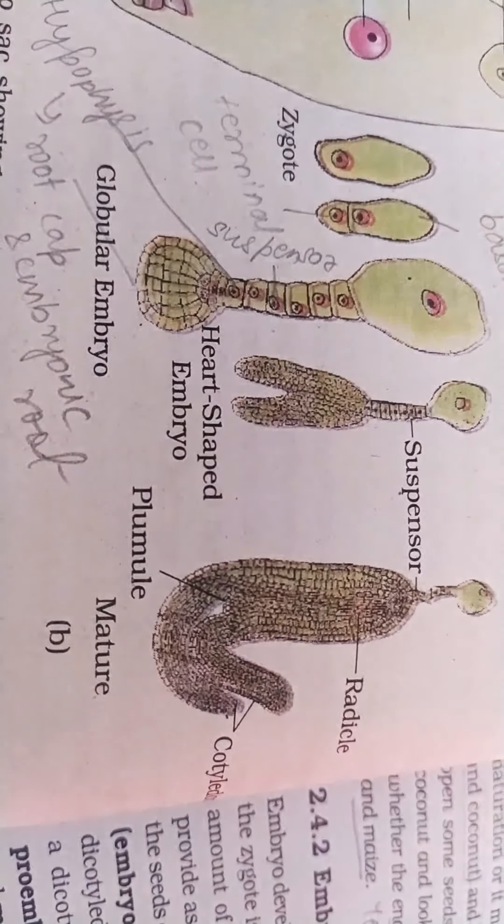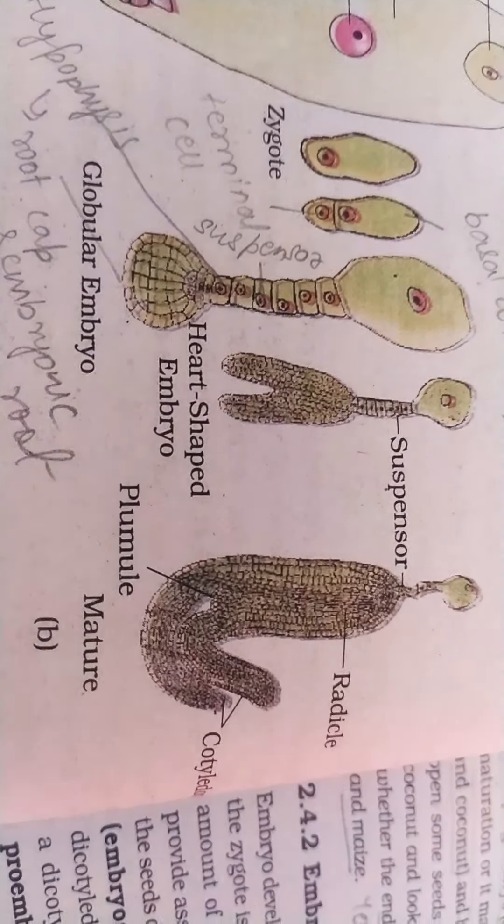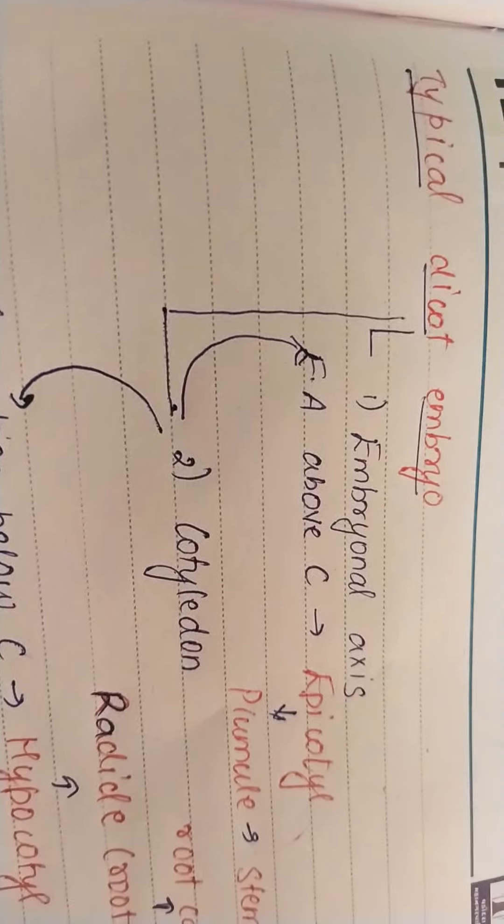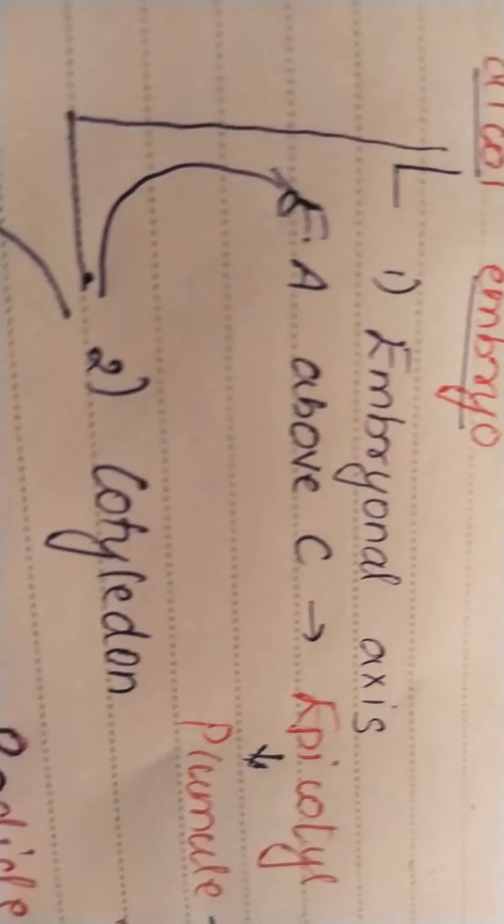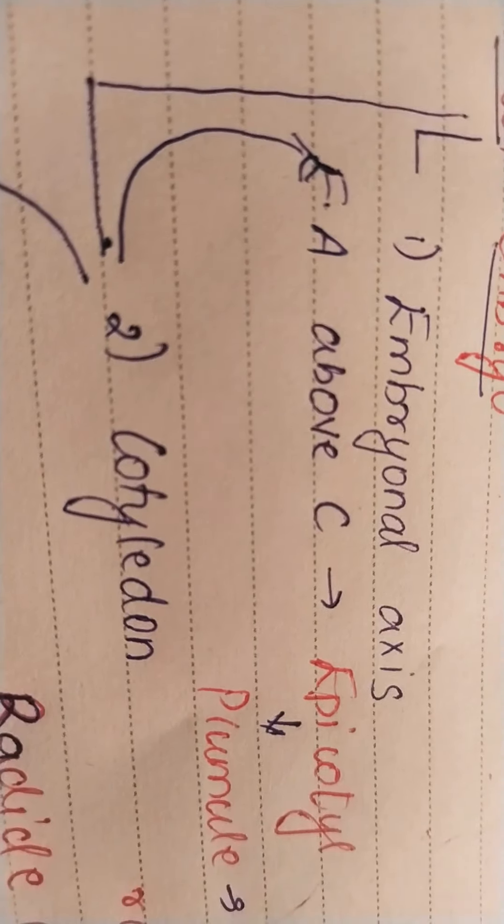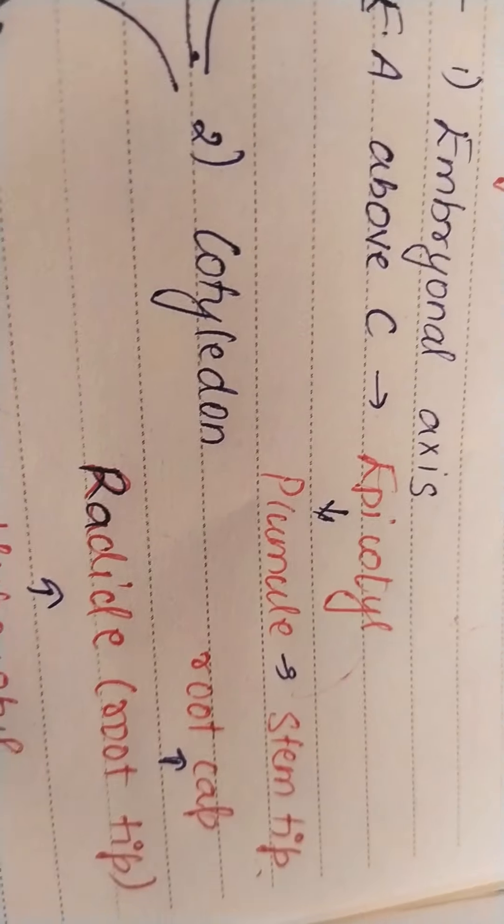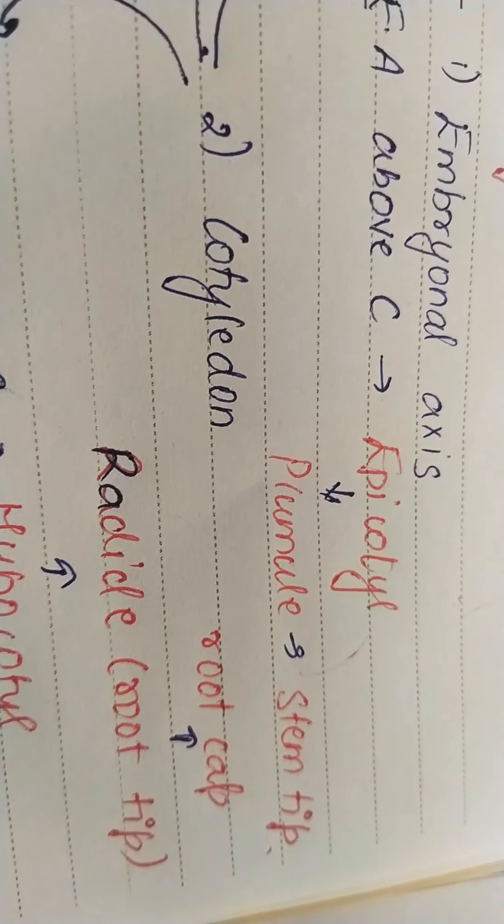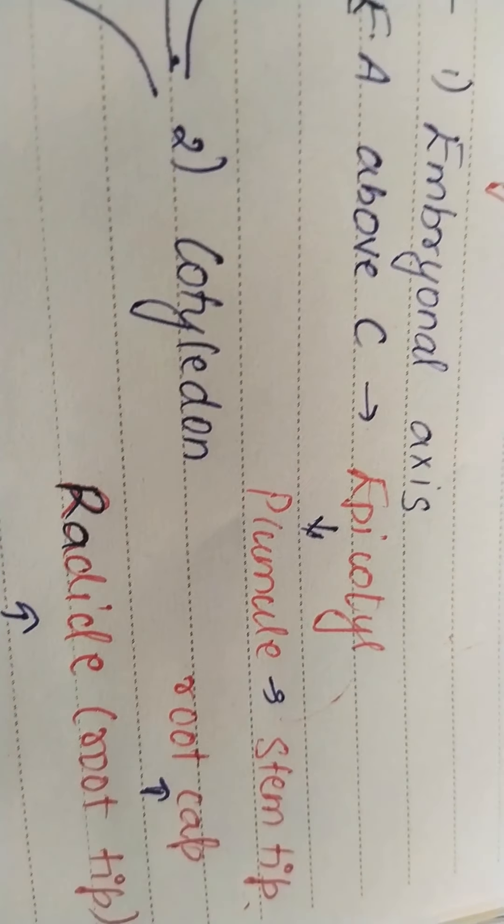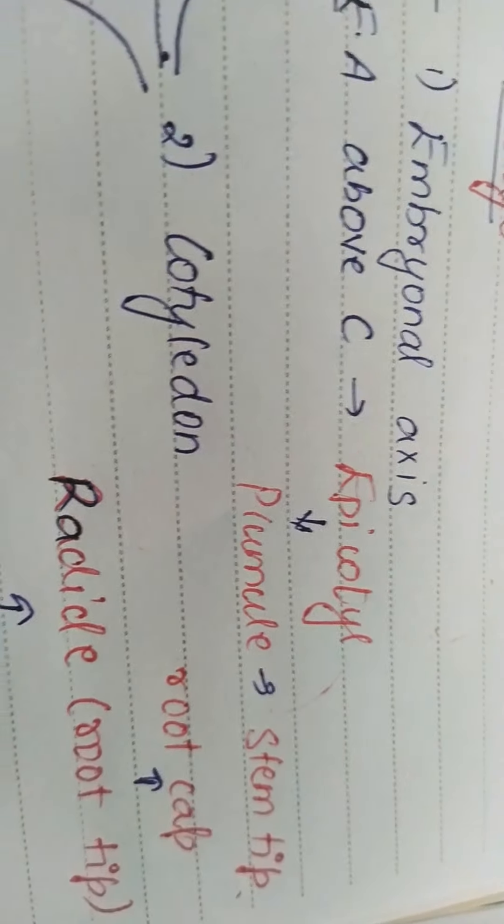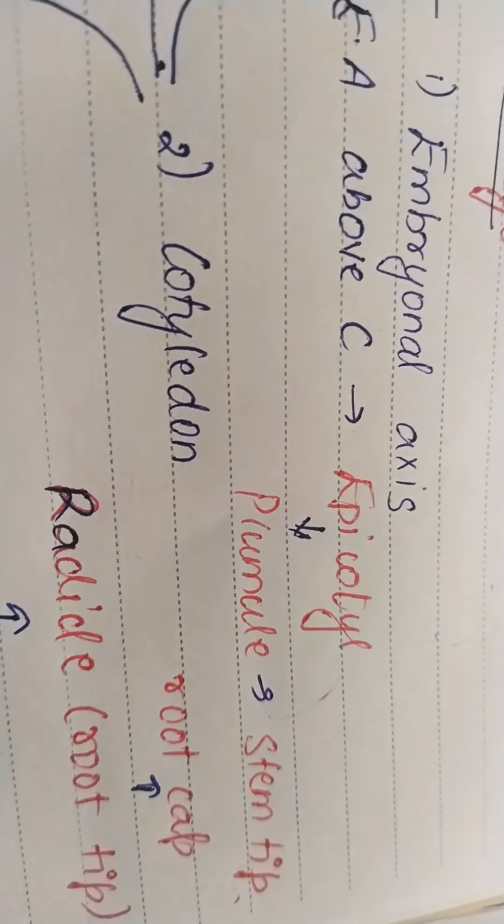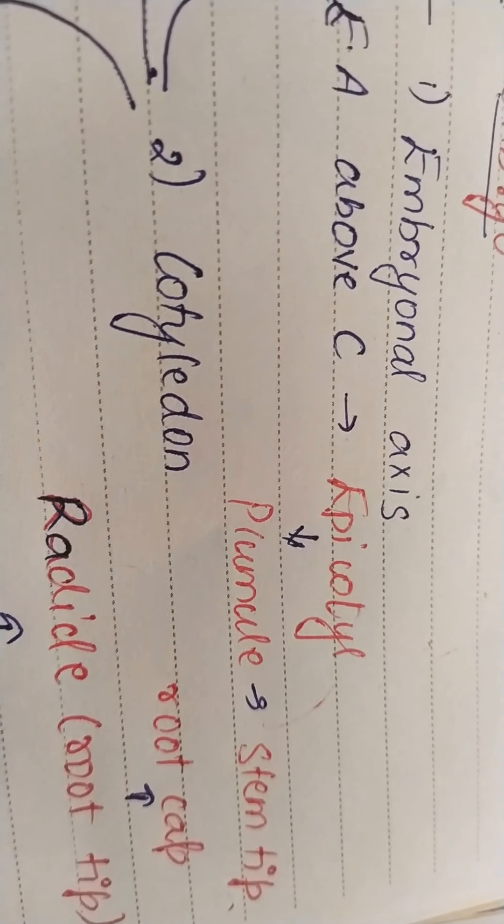Let us talk about a typical dicot embryo. It will have two things: first one embryonal axis, second one cotyledon. Now the embryonal axis above cotyledon is known as epicotyl, and this epicotyl will terminate into a structure known as plumule which is going to make stem tip.